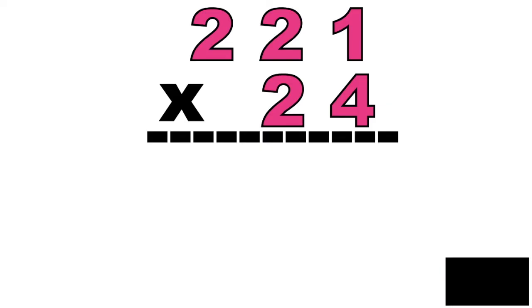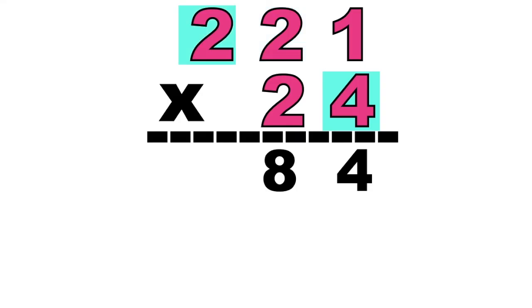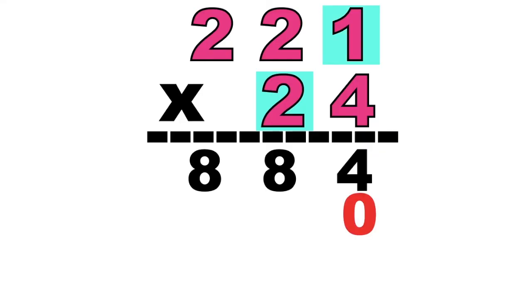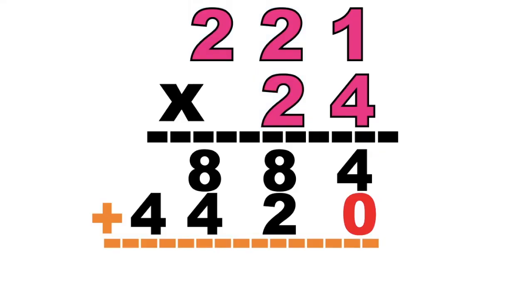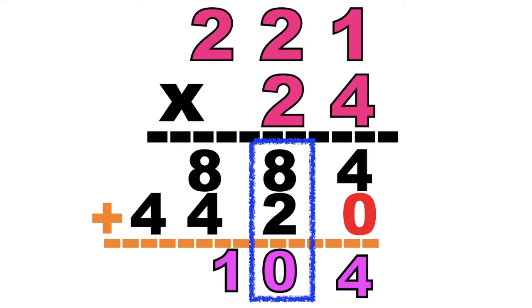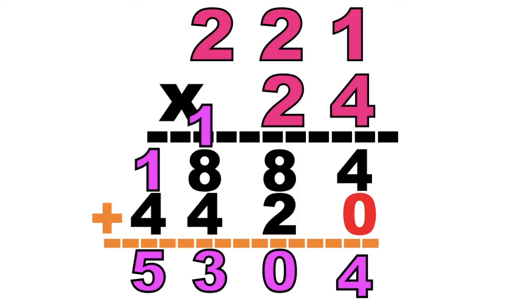Time's up. Let's see if your answer is correct. Let's start. 4 times 1 equals 4. 4 times 2 equals 8. 4 times 2 equals 8. So let's proceed to the second digit. At digit 2, don't forget to write your imaginary 0. Let's have 2 times 1 equals 2. 2 times 2 equals 4. 2 times 2 equals 4. We can now add them. 4 plus 0 equals 4. 8 plus 2 equals 10. Carry 1. 1 plus 8 plus 4 equals 13. Carry 1. 1 plus 4 equals 5. So the product of 221 and 24 is 5,304.